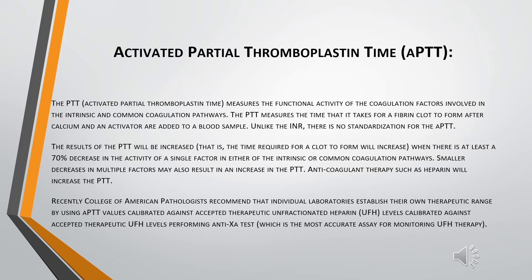The normal range and result of APTT highly depend on the laboratory equipment and reagent used. It is usually 25 to 30 seconds. The College of American Pathologists recently recommended that each individual laboratory establish their own therapeutic range, which can be established by calibrating APTT values against the accepted therapeutic unfractionated heparin levels, obtained by performing the anti-Xa factor test.